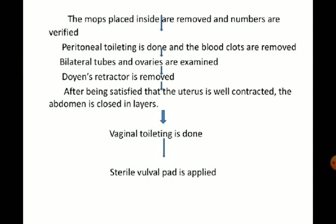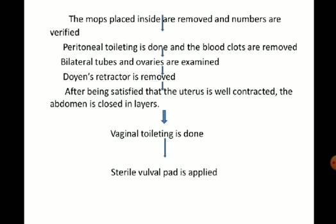The mops placed inside are removed and their number is verified against the instrument count. Peritoneal toileting is done: blood clots are removed and the peritoneal cavity is washed with distilled water. Bilateral tubes and ovaries are also examined. The Doyen's retractor is removed. After confirming the uterus is well contracted, the abdomen is closed in layers. Finally, vaginal toileting is done and a sterile vulval pad is applied. The main operative procedure is now complete.